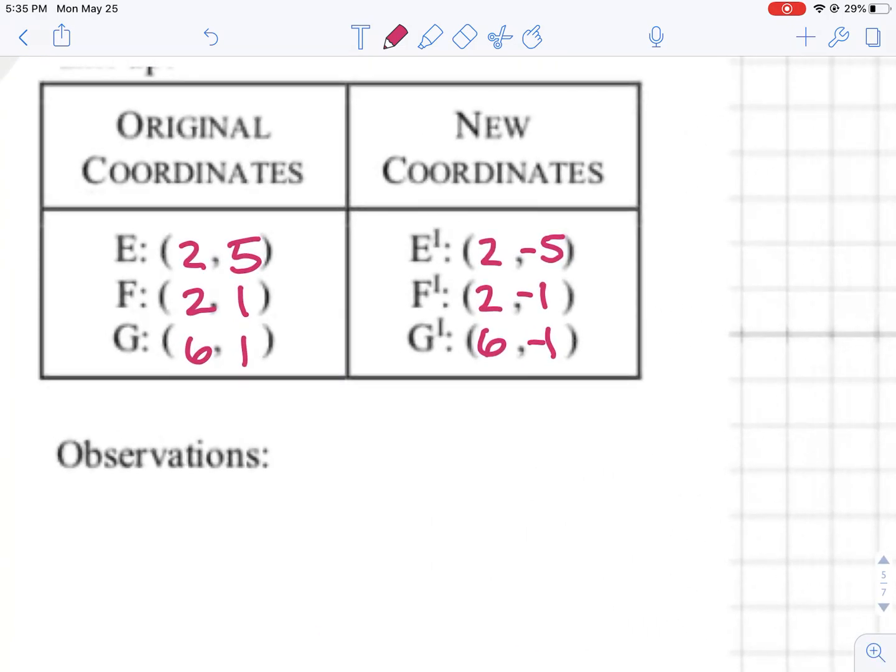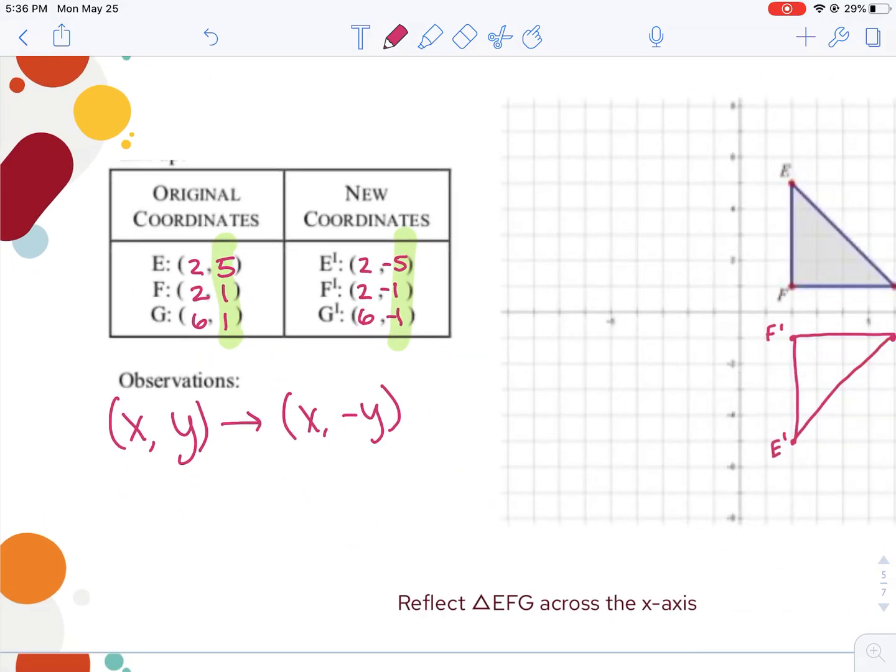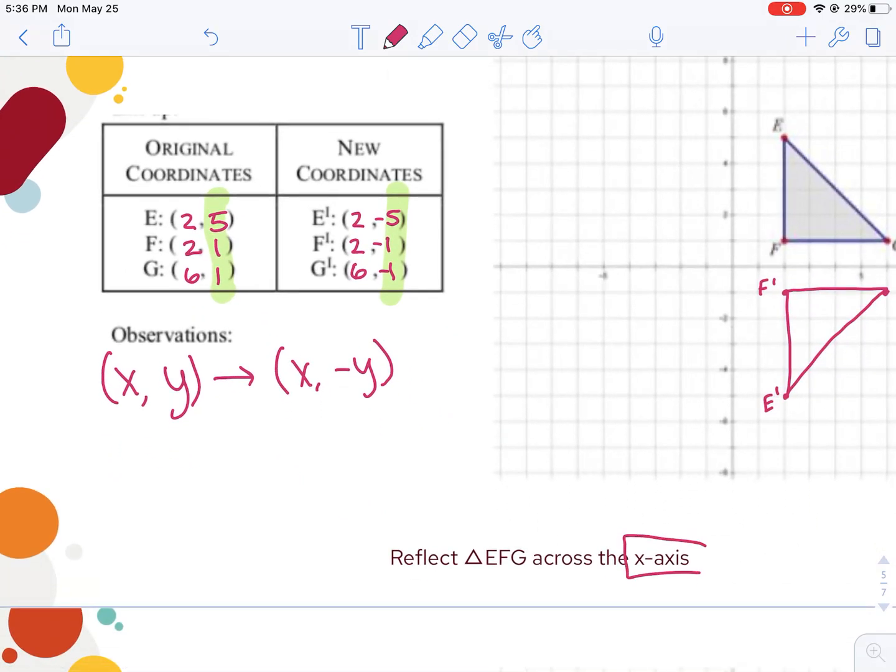When I look just at my ordered pairs, I can see pretty quickly that this time just the opposite happened. My Y values became negative. So my rule could be written as XY becomes X negative Y. And again, this is counterintuitive because we reflected across the X axis, the Y became negative. So when you reflect, it's the opposite of what you think it should be. If you're reflecting across the Y, the X becomes negative. Reflect across the X, Y becomes negative.